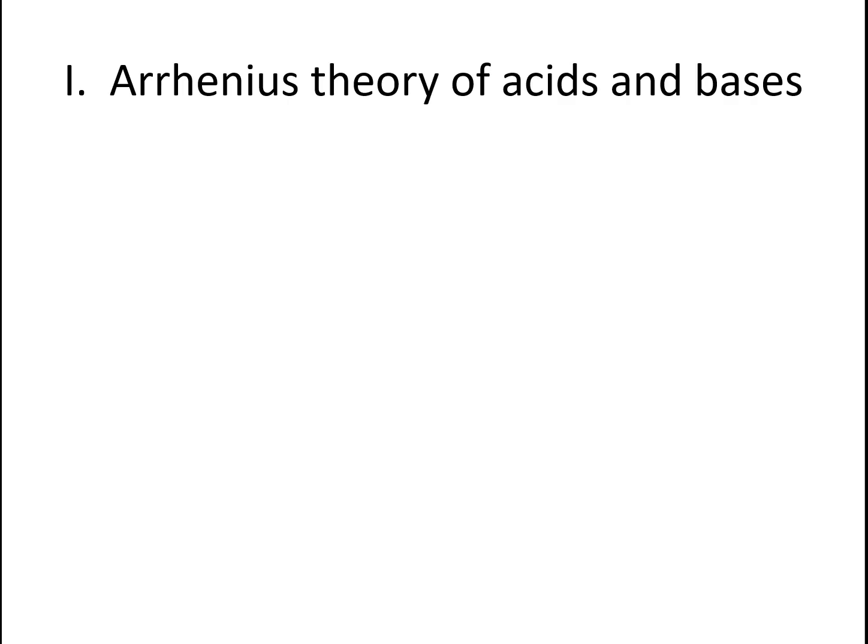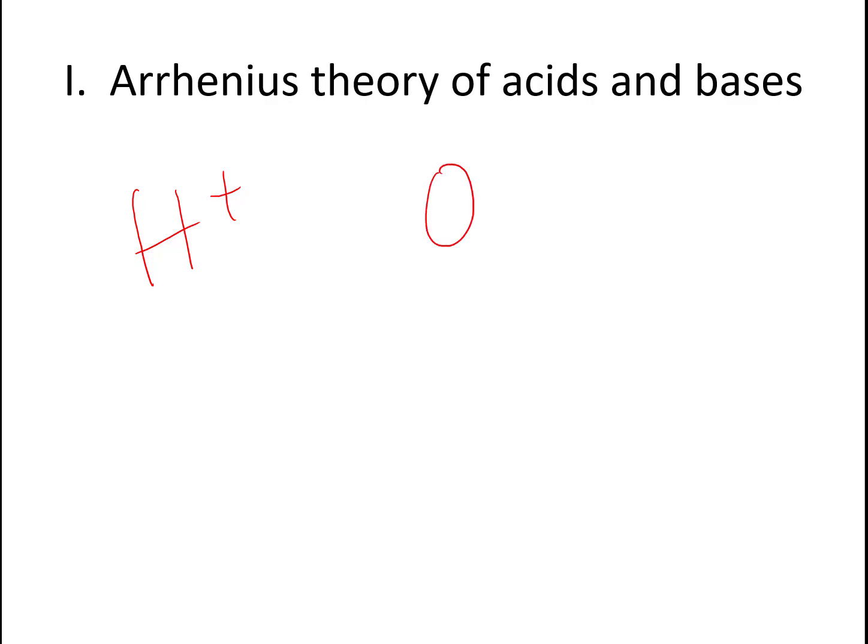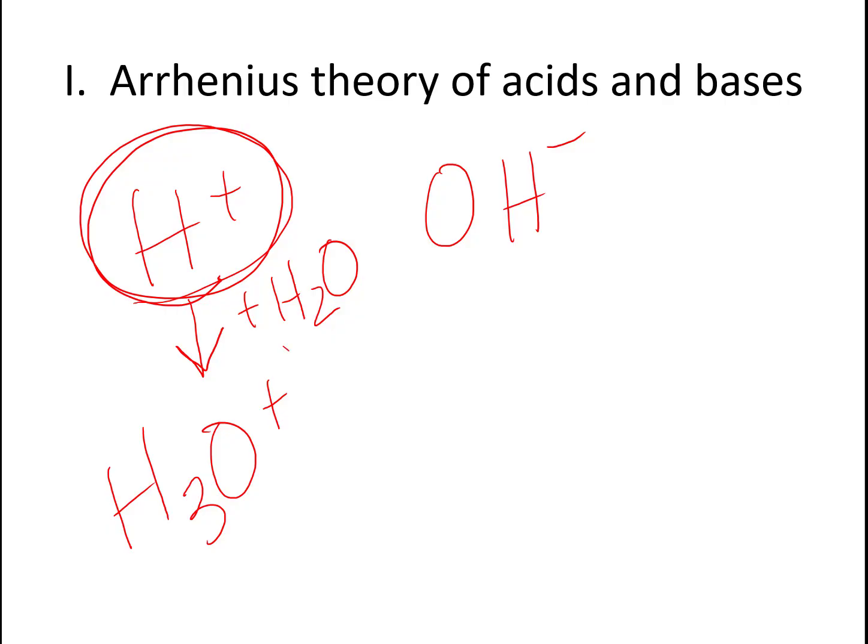The Arrhenius theory has to do with ions, specifically two ions: hydrogen and hydroxide. In addition to hydrogen, there's another thing you might see called hydronium. Hydronium is what happens when hydrogen attaches itself to water. Instead of H2O, you end up with H3O+. If we take a hydrogen ion and stick it on water, we get hydronium. We're also going to talk about hydroxide.